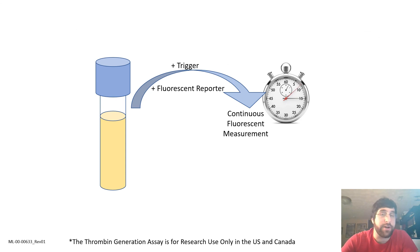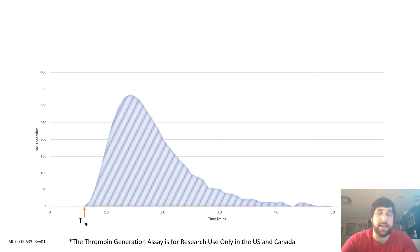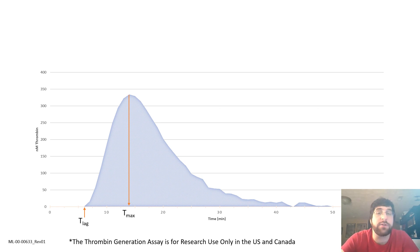Then there is the thrombin generation assay, TGA or TGT. In it, anticoagulated plasma is mixed with some coagulation trigger — typically tissue factor and procoagulant phospholipids if platelets are not present. A fluorescent reporter which is cleavable by thrombin is also included in this reaction mix. Continual monitoring of the thrombin cleavage signal over a period of time, often 60 minutes, allows for a thrombin generation profile to be established. There is an initial lag time as the early stages of the coagulation cascade are being carried out, and there is then the time to peak thrombin generation, describing how quickly the reactions are being carried out, typically seen within 20 minutes.